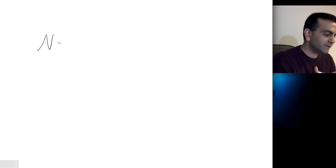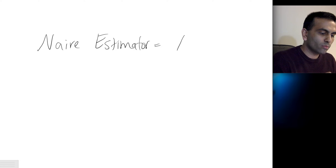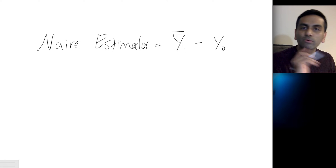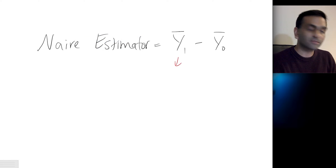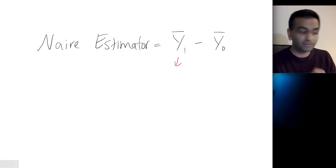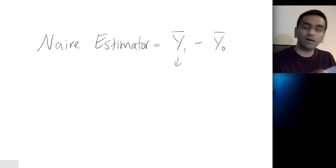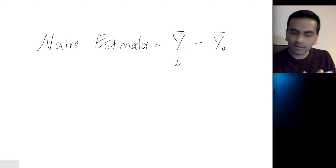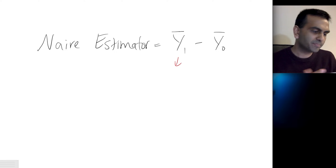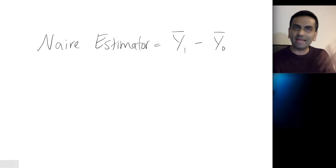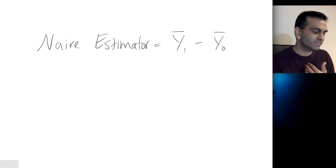The naive estimator is simply Y1 bar — the average Y1 in your sample — minus the average Y0 in your sample. Notice that this doesn't include everybody: this is not everybody's Y1. This is only the Y1 for the people who chose to go to college. And this is only the Y0 — income without a college degree — for those who chose not to get a college degree. It's just the difference if you ask people about their income and education.